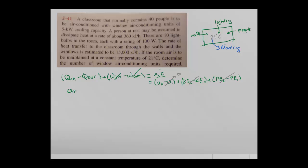We can see that Q_in should be equal to Q_out. All of the heat that we gain in the room will be removed by the air conditioning units. The Q_in will be the summation of all heat loads: Q from people, plus Q from lighting, plus Q through the walls. Starting with people, we know that we have 40 people, and each person is assumed to dissipate 360 kJ per hour.